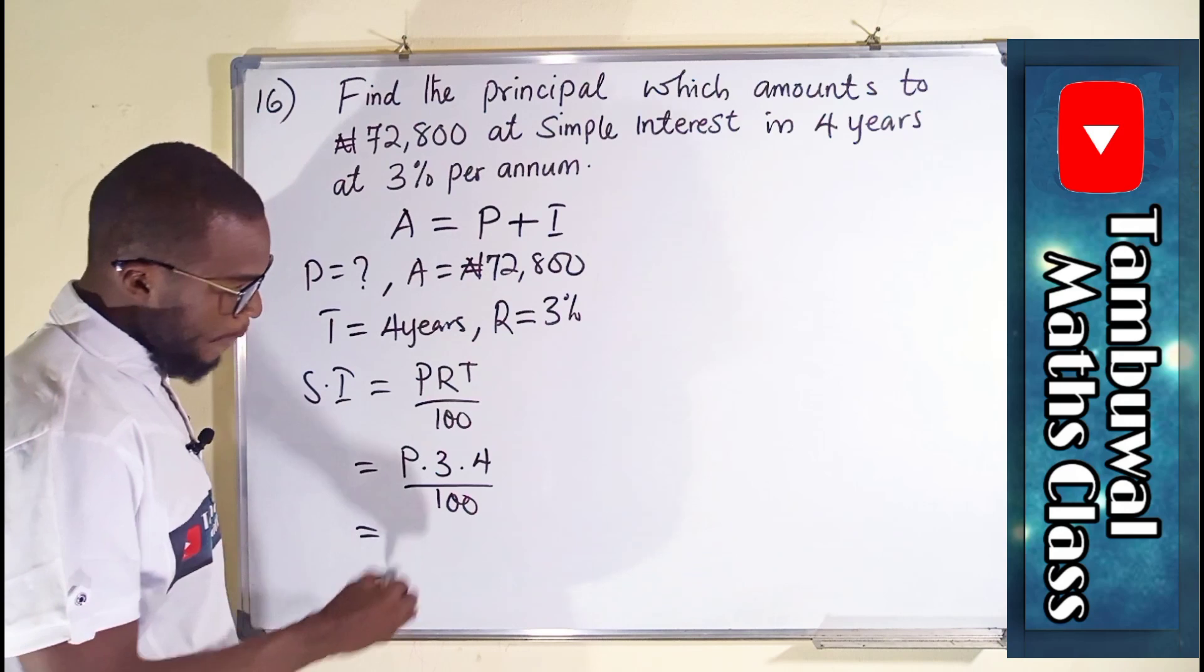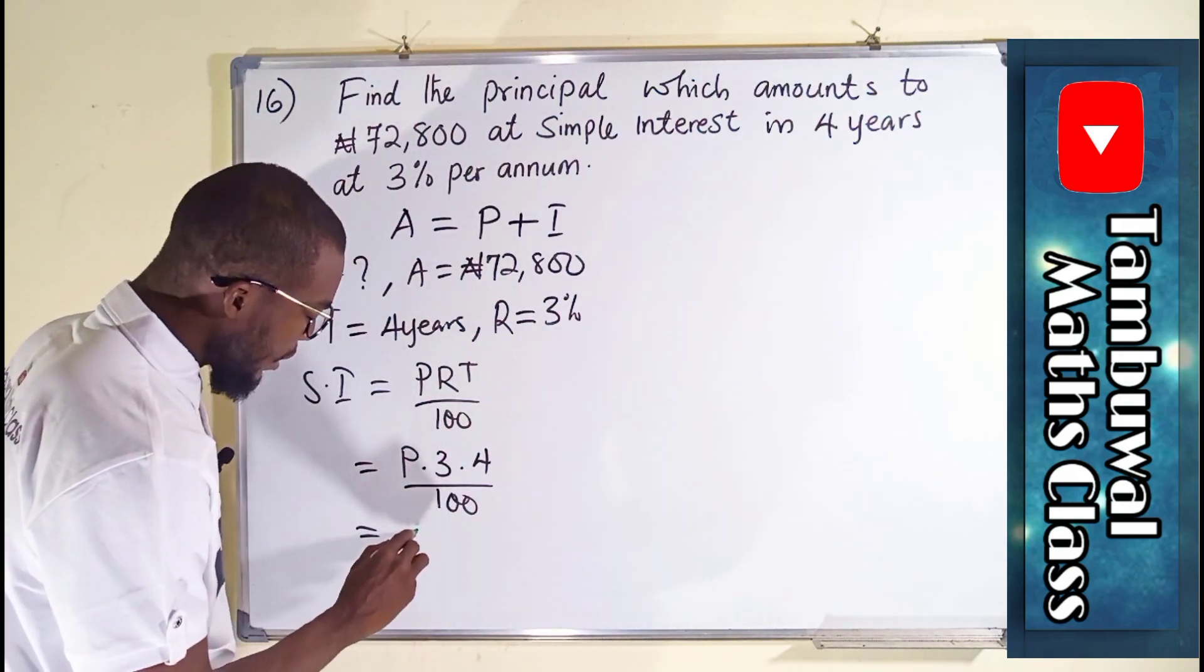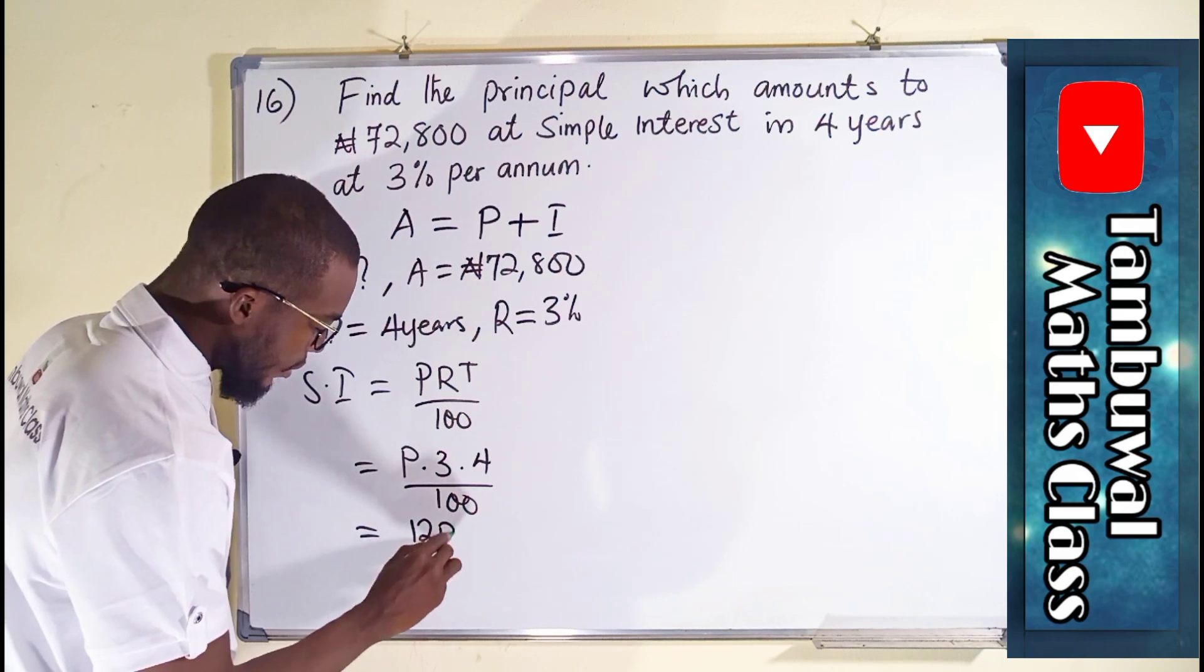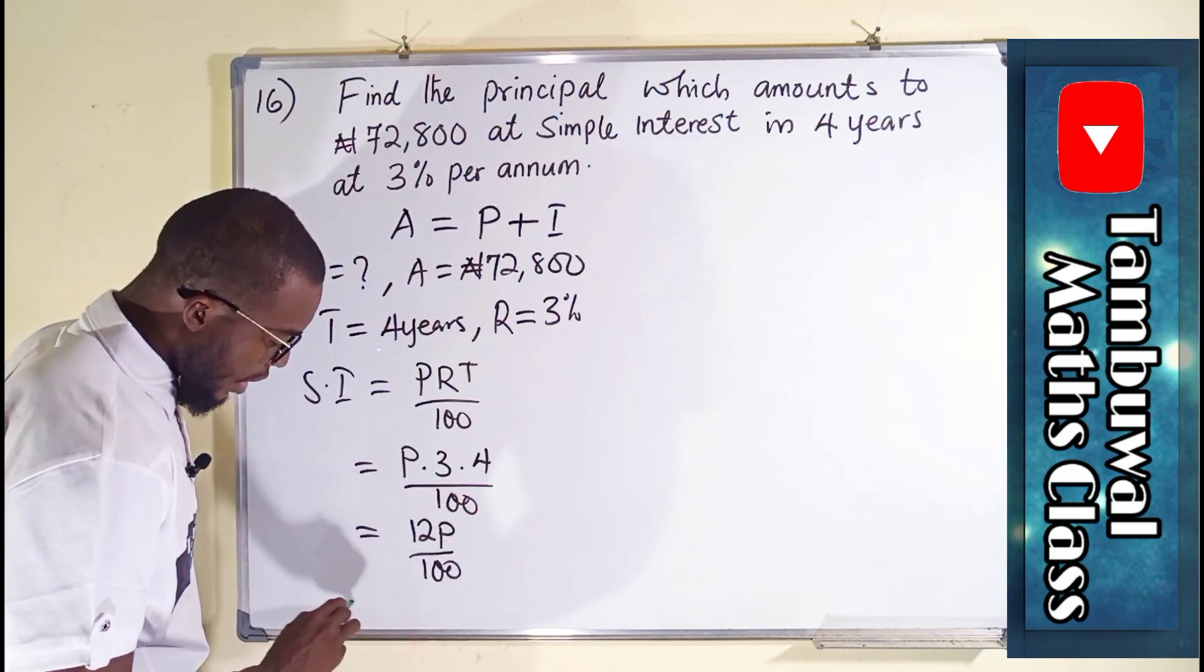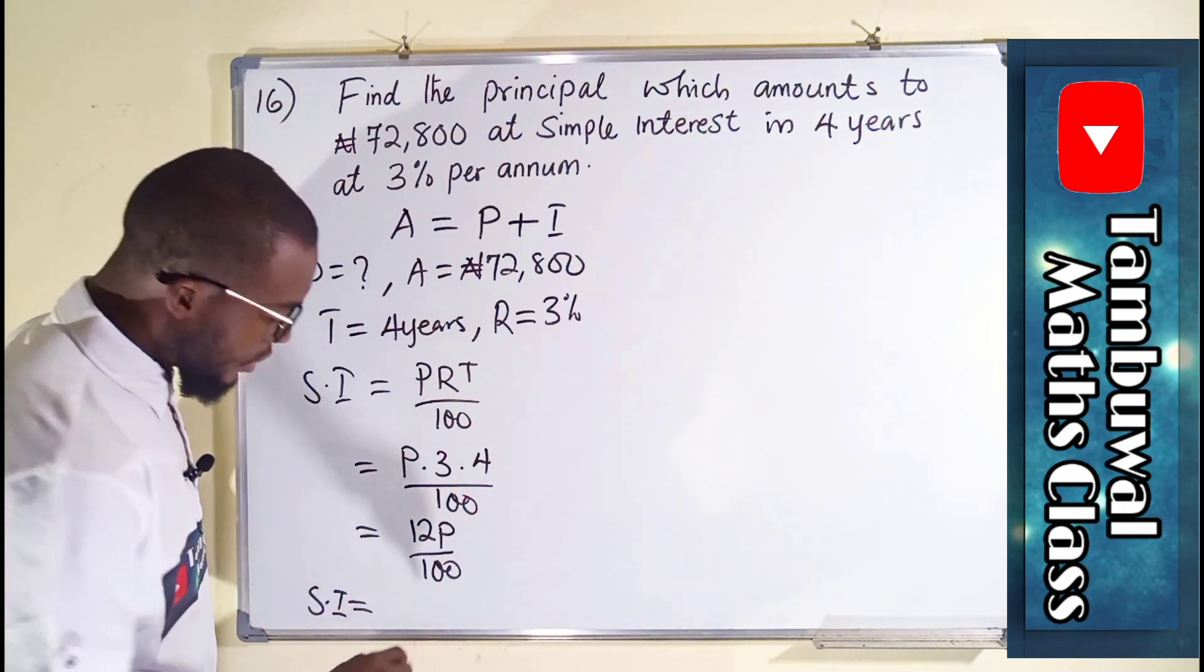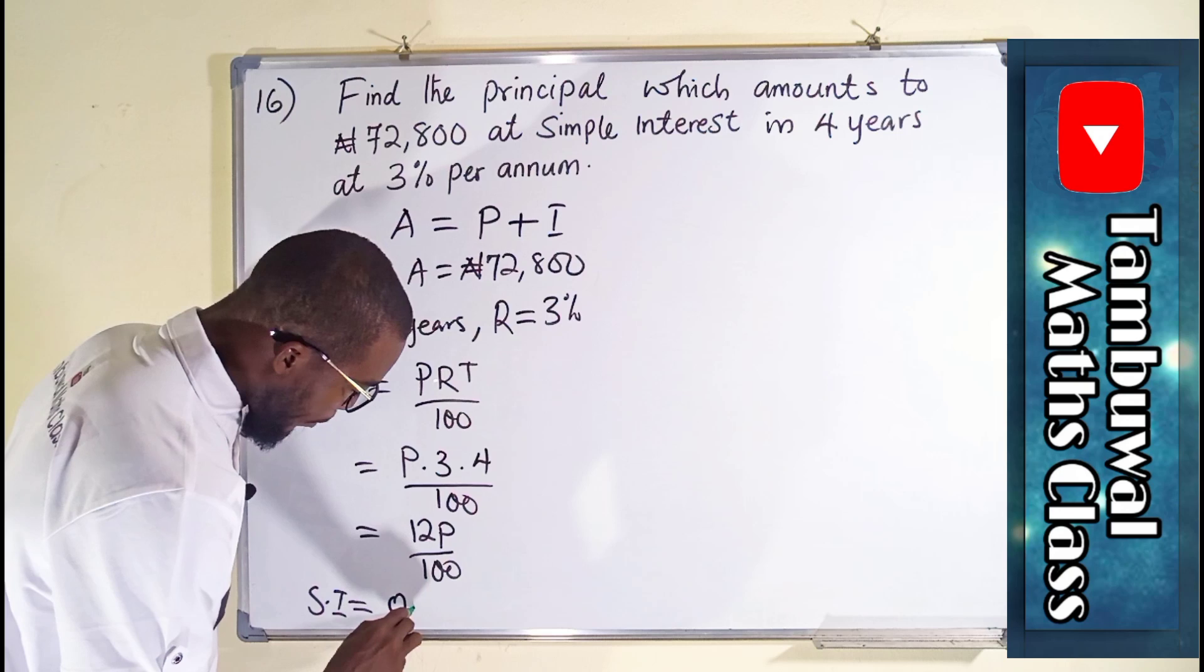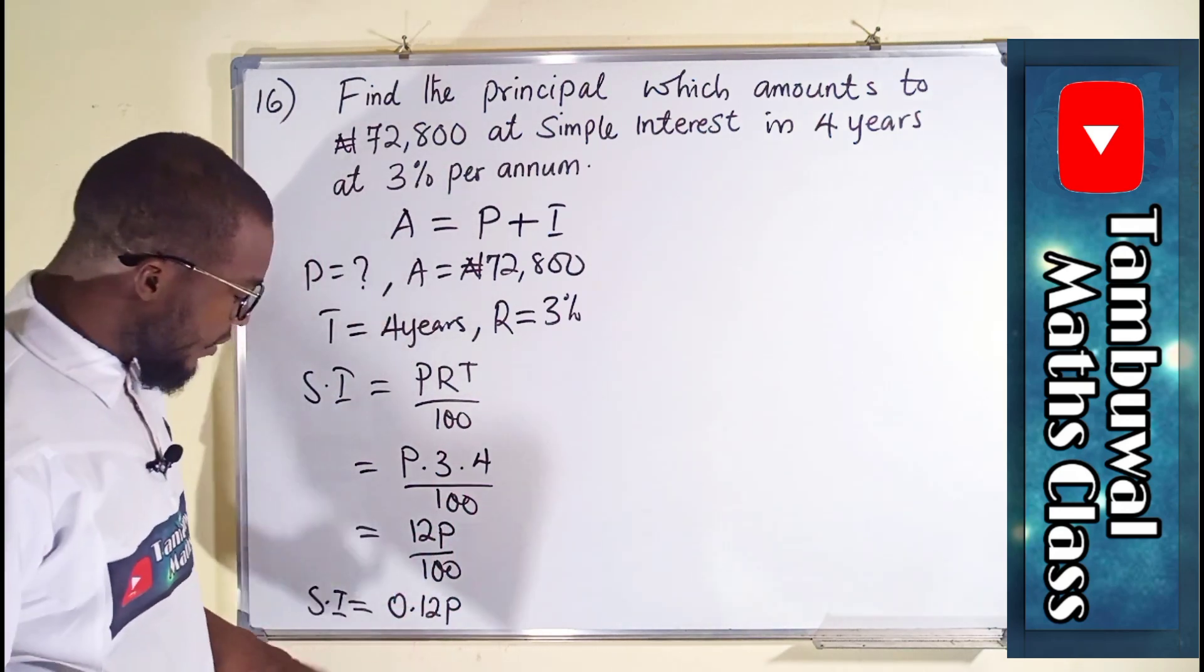This is equal to 3 times 4 is 12. 12 times P is 12P divided by 100. And lastly, the simple interest, which is the interest, is equal to 0.12P. So this is the interest.